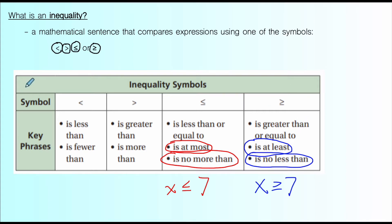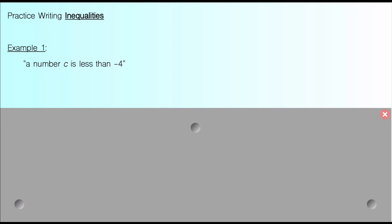We're going to use these phrases now to write some example inequalities. The first example says a number, which we're using C, is less than negative 4. This one's pretty straightforward: C is less than negative 4. So this word phrase is translated into the inequality C < -4. Can't get any simpler than that.